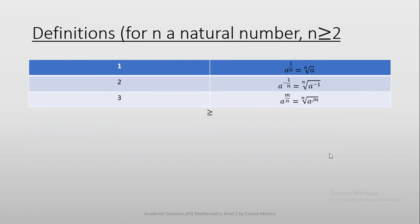We also have definitions, where n is a natural number and n is greater or equal to 2. We have three definitions. Definition 1: a to the exponent 1 over n is equals to the nth root of a. Definition 2: a to the exponent negative 1 over n is equals to the nth root of a to the exponent negative 1. Definition 3: a to the exponent m over n is equals to the nth root of a to the exponent m.